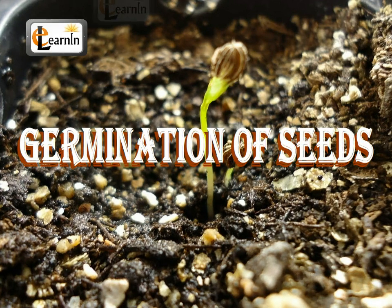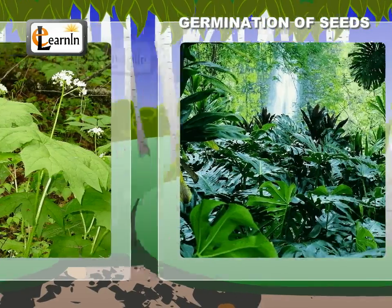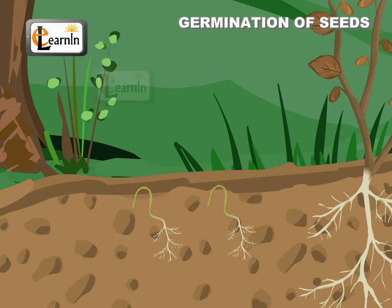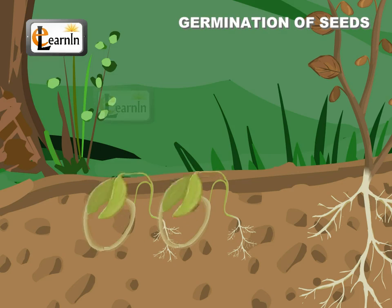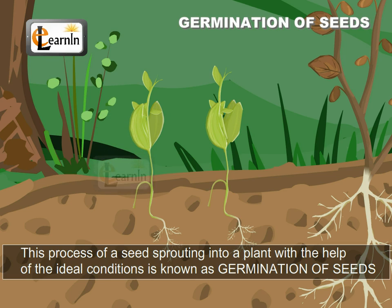Germination of seeds. We see many plants around us in our garden, but do you know how these plants are grown? A plant grows from the seed when it is provided with the necessary conditions like water, temperature and carbon dioxide. This process of a seed sprouting into a plant with the help of the ideal condition is known as germination of seeds.